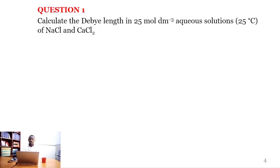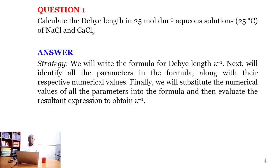Our first question says: calculate the Debye Length in 25 mole per dm³ aqueous solutions at 25 degrees C of sodium chloride and calcium chloride. To solve this problem, we are going to write the formula for Debye Length, identify all the parameters in the formula along with their respective numerical values, then substitute the numerical values into the formula and evaluate the expression to obtain κ⁻¹.